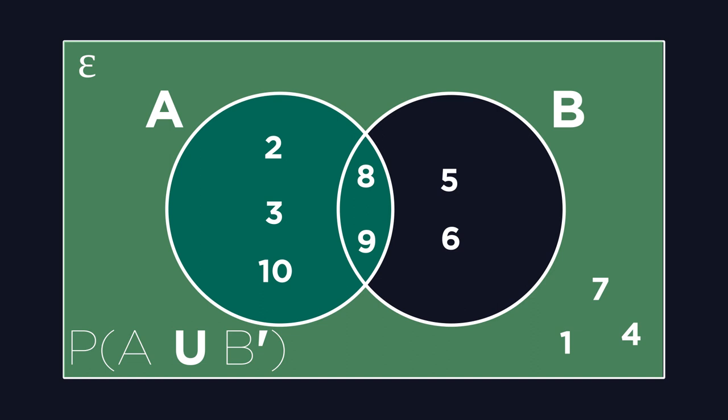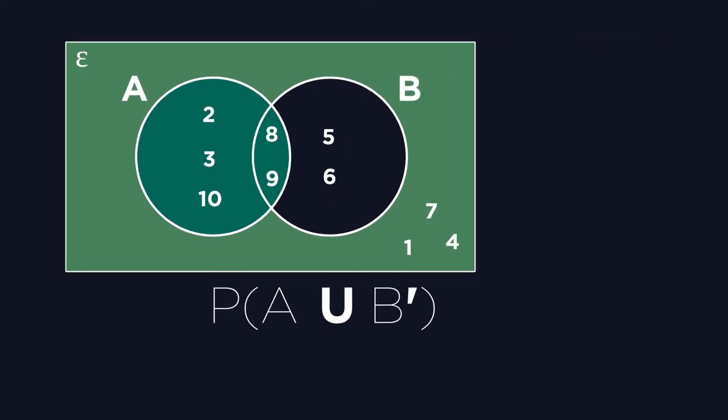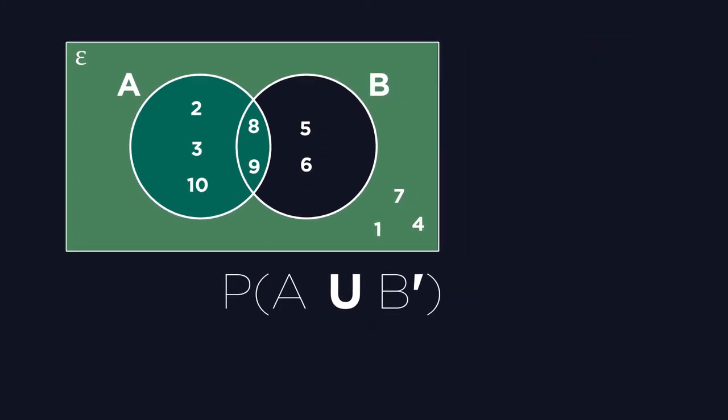Because we only need to follow one rule, however, in contrast to intersection, where we only took the overlapping area, with union, we take every area that is shaded. Our probability of being in A or not being in B is therefore the 8 shaded values out of 10 in the universal set, giving us a probability of 8 out of 10, or 4 out of 5 simplified.